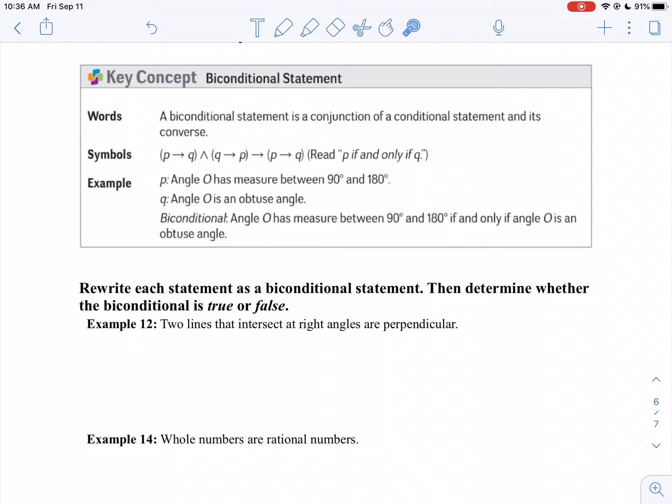We can abbreviate or write a biconditional statement with the words if and only if. So in the example, we have angle O has a measure between 90 and 180.